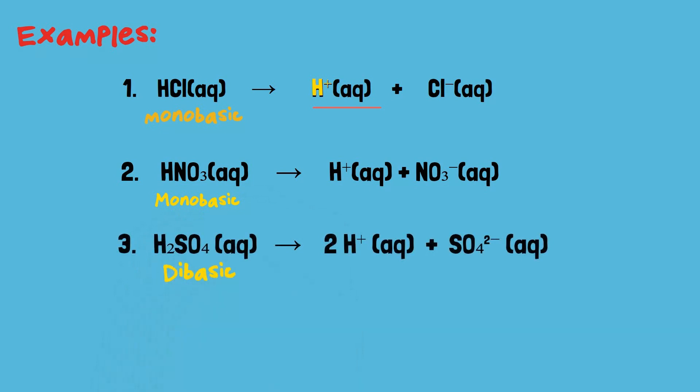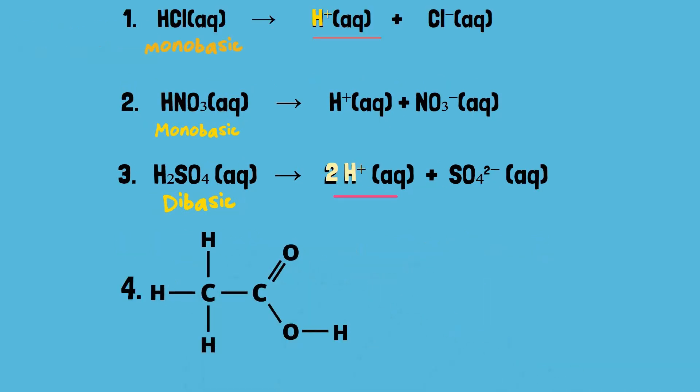Sulfuric acid is dibasic because each molecule donates and forms two hydrogen ions. Now, acetic acid might seem like it has four hydrogen ions. But that is not correct. Oxygen is very electronegative and tends to gain electrons. In acetic acid, only one hydrogen is directly attached to an oxygen atom. And the oxygen takes the electron from this hydrogen atom to form one hydrogen ion. Therefore, acetic acid is monobasic.